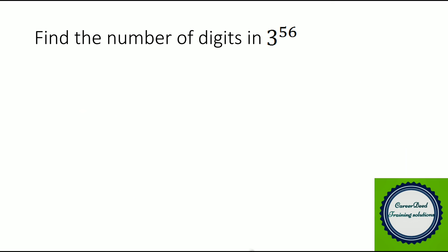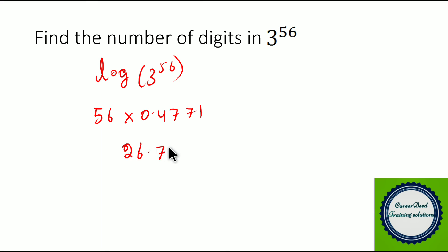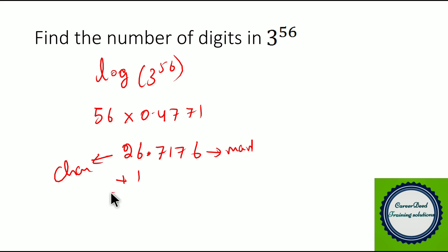Last question: find the number of digits in 3 power 56. Using calculators gives answers in exponents, but logarithms makes this simple. Taking log of 3 power 56 gives 56 into log 3. Since log 3 equals 0.4771, we compute 56 into 0.4771 equals 26.7176. The part before the decimal is called the characteristic (26) and after the decimal is the mantissa. To find the total number of digits, add 1 to the characteristic: 26 plus 1 equals 27. So 3 power 56 has 27 digits.